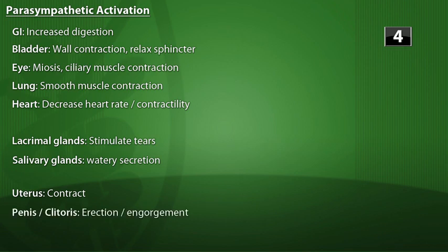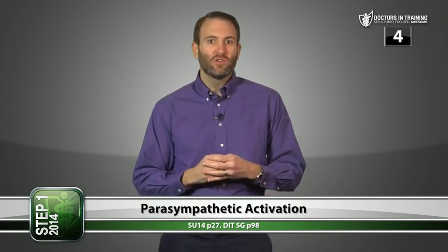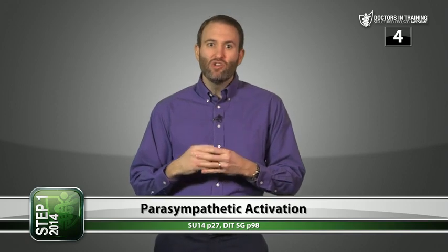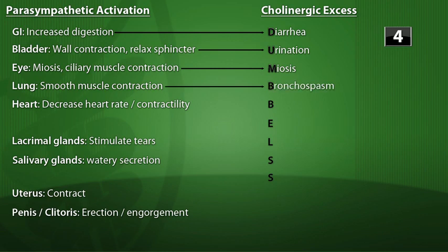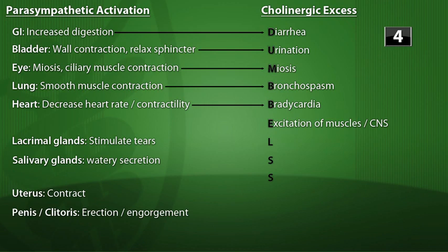With excess cholinergic activity, you can use the mnemonic DUMBELS: Diarrhea, Urination, Miosis, Bronchospasm, Bradycardia, Excitation of skeletal muscle and CNS, Lacrimation, Salivation, and Sweating. Everything becomes leaky — extra fluid is going everywhere. Some of these, like sweating and muscle excitation, don't fit the parasympathetic pattern exactly, and we'll explain why.